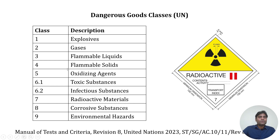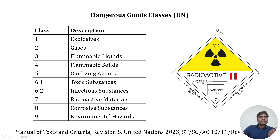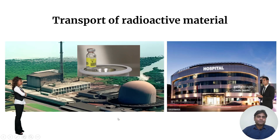The fourth class is for flammable solids, the fifth is for oxidizing agents. Class 6 has been divided into two parts: 6.1 for toxic substances and 6.2 for infectious substances. Class 7 refers to radioactive material — that is where this number 7 comes from. Class 8 is for corrosive substances and Class 9 is for environmentally hazardous substances.